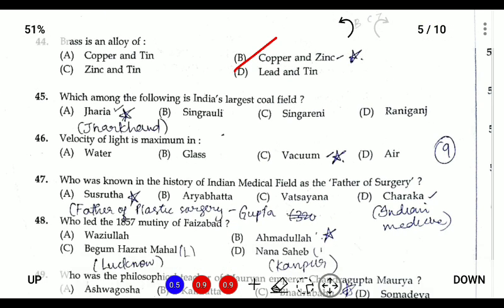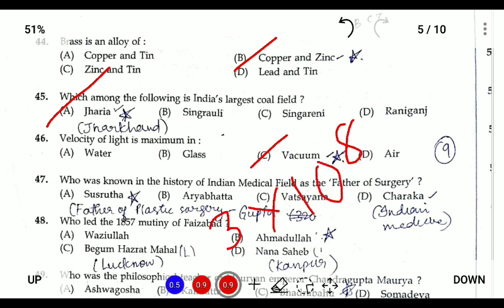Question forty-five: which is the largest coalfield in India? Jharia in Jharkhand is the largest coalfield in India. Question forty-six: the velocity of light is maximum in vacuum, at 3 × 10⁸ meters per second.